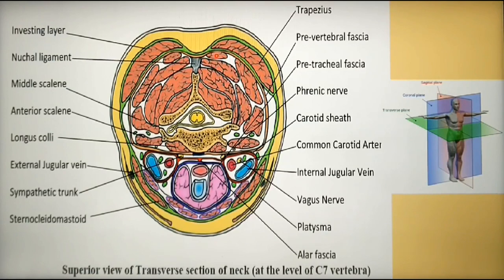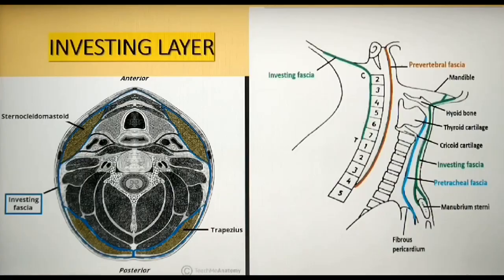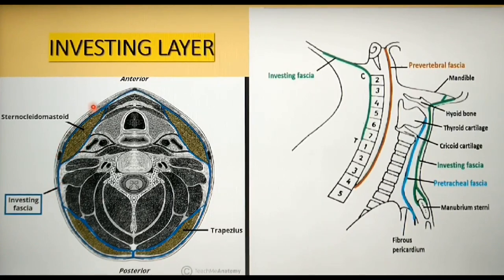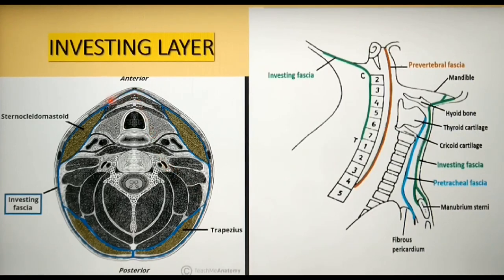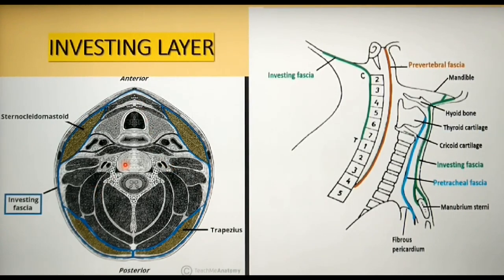Most posteriorly, you can see that the investing layer of deep cervical fascia has split itself to enclose the trapezius muscle. This is the description of deep cervical fascia in a nutshell. Moving on to the investing layer of deep cervical fascia, which is depicted in blue color — it is the more superficial aspect of the deep cervical fascia and surrounds all structures in the neck like a collar.